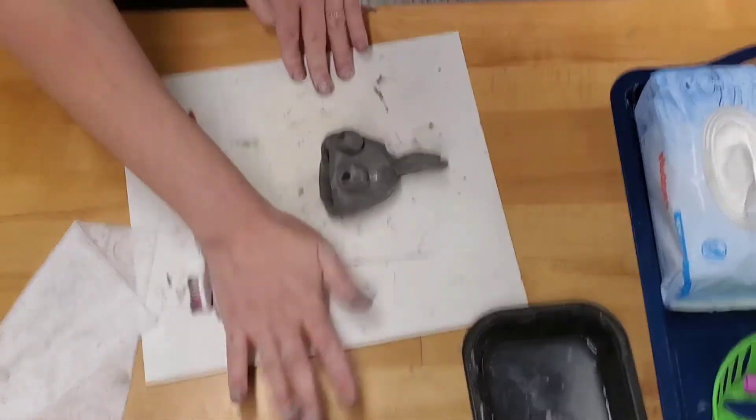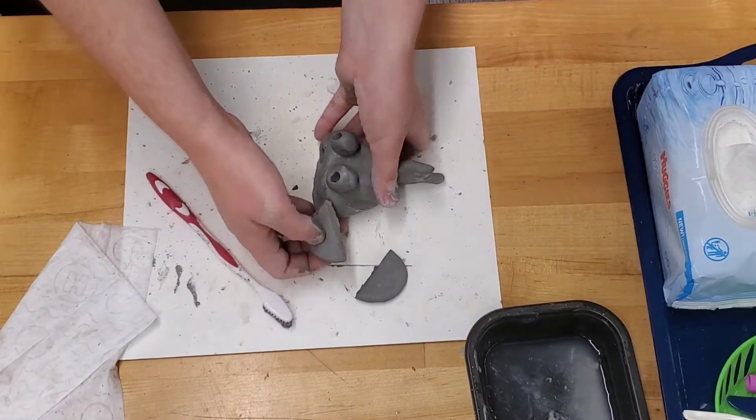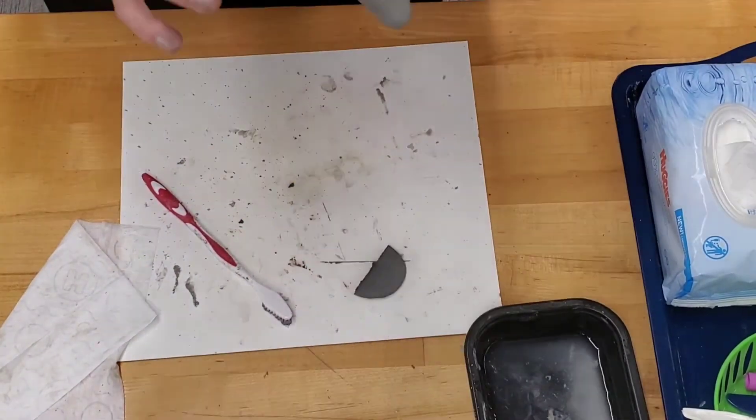If you want to add side fins, take the remaining clay, roll it into a ball, cut it in half, then you have two equal fins for each side.